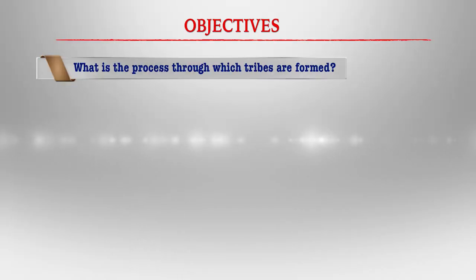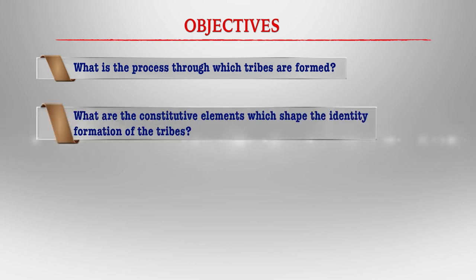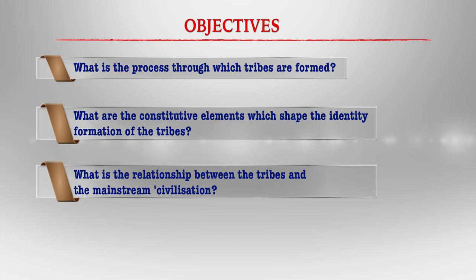The issue of the formation of tribal identity therefore involves mainly three questions: What is the process through which tribes are formed? What are the constitutive elements which shape the identity formation of the tribes? And what is the relationship between the tribes and the mainstream civilization — in other words, what are the significant markers which distinguish the tribal identity from the mainstream civilizational zones? In this section, we will focus on these basic questions related to formation of tribal societies.